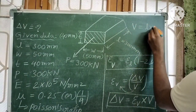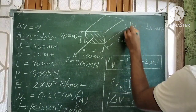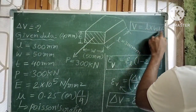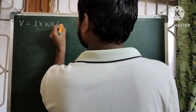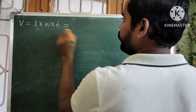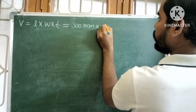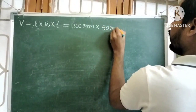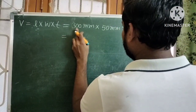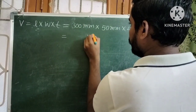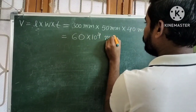Volume of a rectangular bar equals L × W × T (length × width × thickness). Substituting the given values: 300 mm × 50 mm × 40 mm. Simplifying: 3 × 5 × 4 = 60, with 10⁴, so volume V = 60 × 10⁴ mm³.